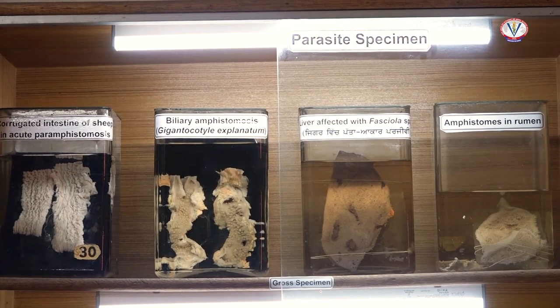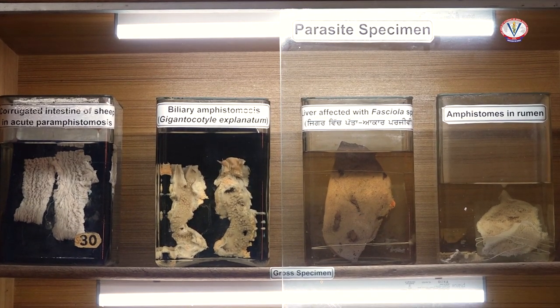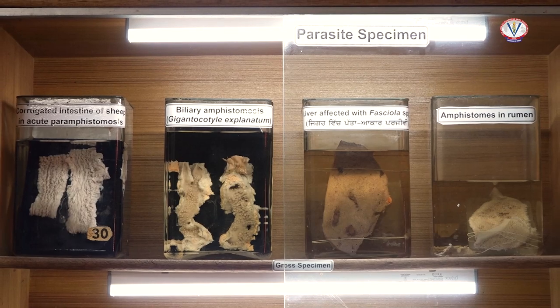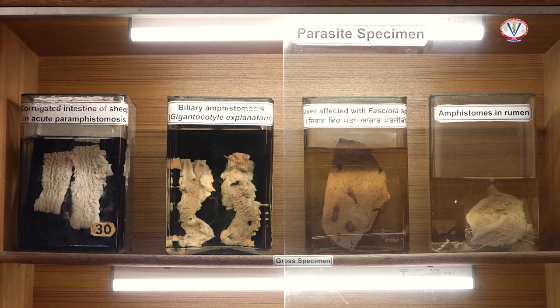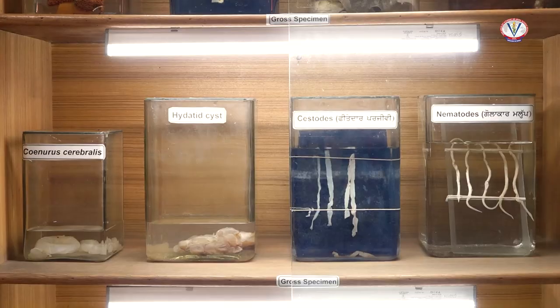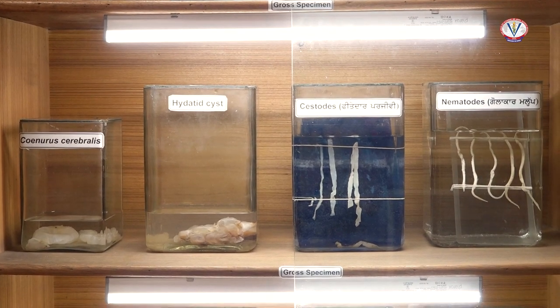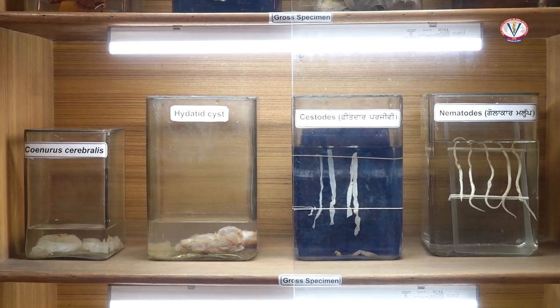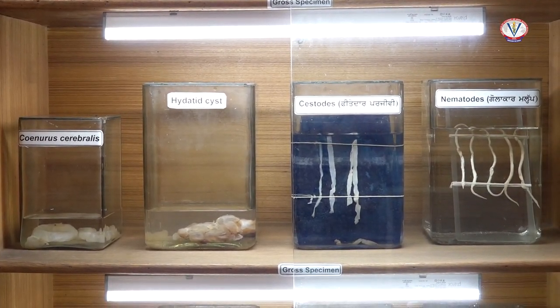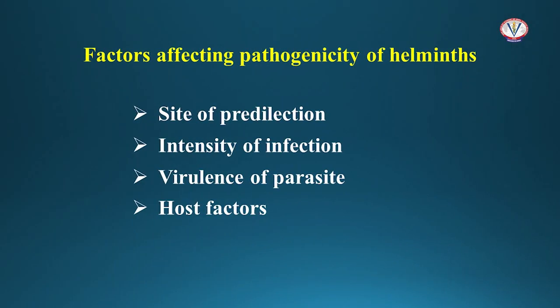Helminths or worms are primarily located in the gastrointestinal tract and also bile duct, liver, pancreatic duct, lung, central nervous system, eyes, blood vessels, peritoneal cavity, oviduct, subcutaneous tissue, etc. The harm caused by these helminths generally depends upon the site of predilection, intensity of the infection, virulence of the parasite, and host factors.